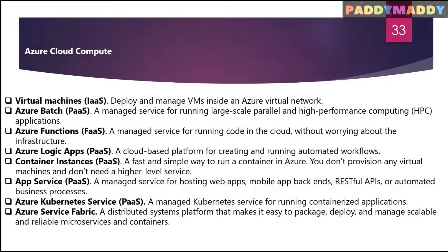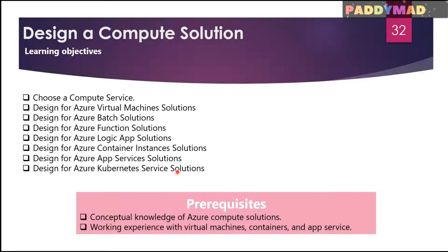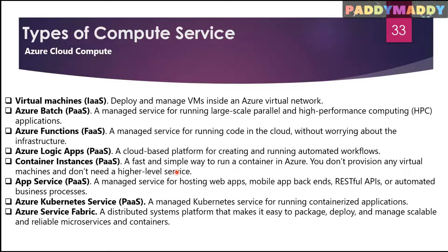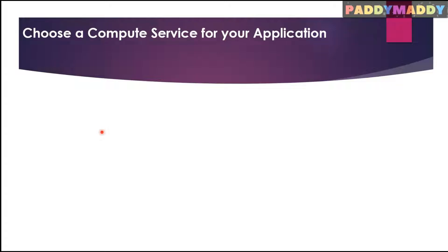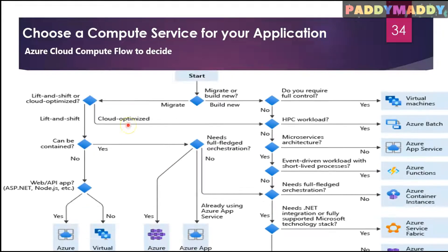In the previous slide we learned about the different types of services available within Microsoft Azure cloud. We talked about virtual machines, app services, functions, and logic apps — but we never talked about how to choose the best one that actually works for us. There is a flowchart we can use to learn when to choose a cloud optimized strategy for migration, or maybe lift and shift.